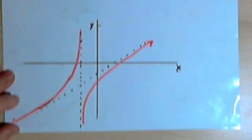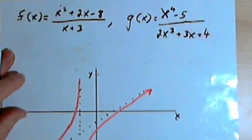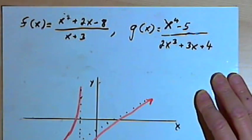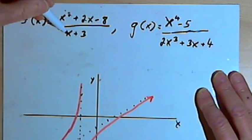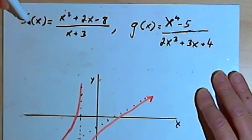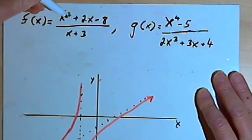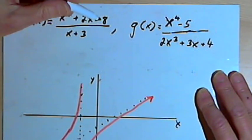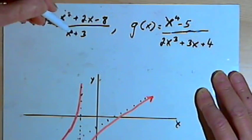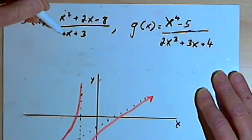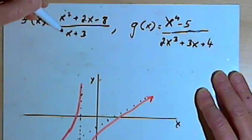Slant asymptotes occur when you have a rational function and the degree of the polynomial in the numerator is one greater than the degree of the polynomial in the denominator. For example, if we have f equals x squared plus 2x minus 8 — a second degree polynomial — over x plus 1, a first degree polynomial, we'll get a slant asymptote.